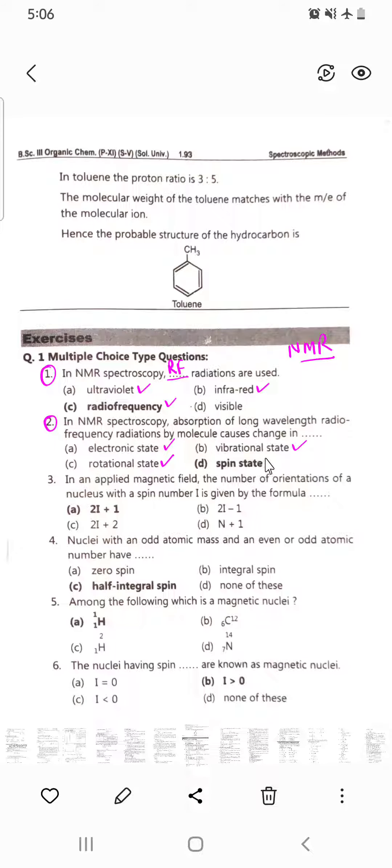We know that alpha spin and beta spin - there is a change in spin states. Alpha to beta and beta to alpha, that's the flipping. So when radio frequency RF radiations are absorbed by a molecule, spin state changes occur.